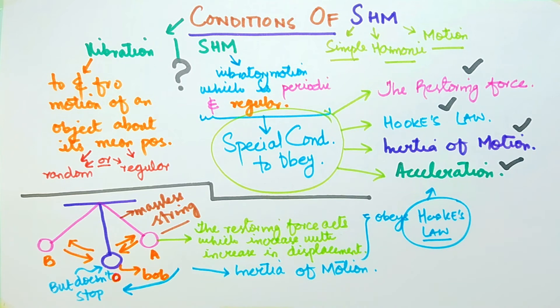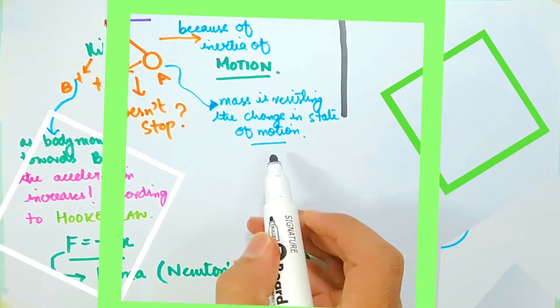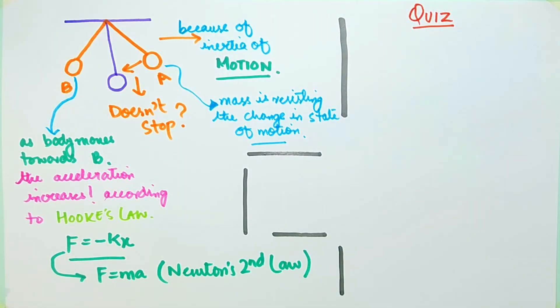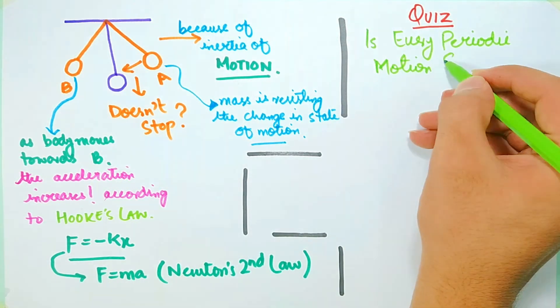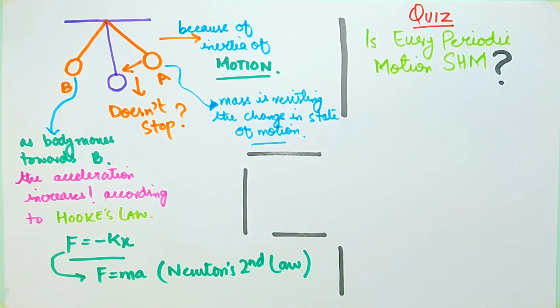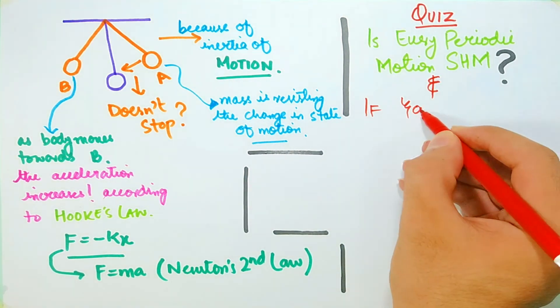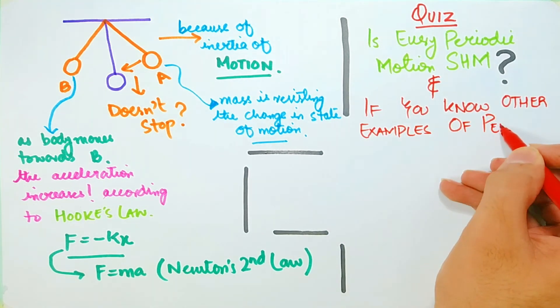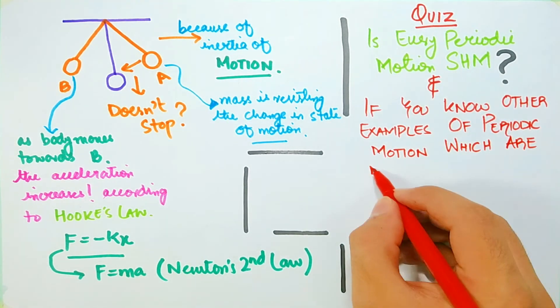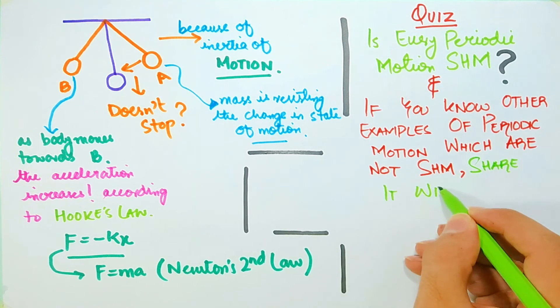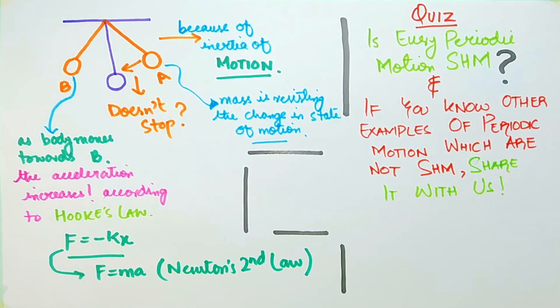If any one of the conditions is not fulfilled, the body cannot execute this type of motion. Quiz! Is every periodic motion simple harmonic motion? Get to know about this from the description box below. Also, find some other examples of periodic motion that is not SHM, and share it with your friends in the comment section below.